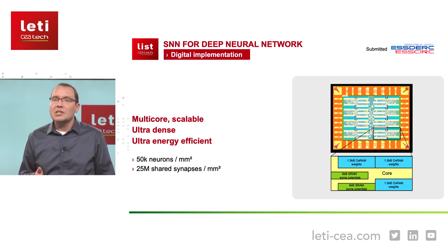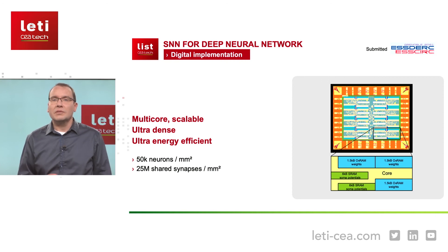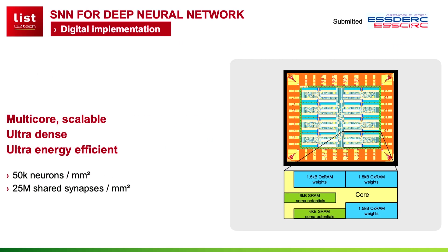The energy efficiency is very good at 1.6 picojoules per synaptic event. It is below the state of the art by a factor of 3 to 10x, and actually below biological neurons, whose energy dissipation is estimated to lie in the 10 picojoule range. It takes only 750 nanojoules to classify a CIFAR-10 image using a ResNet-11 network topology.